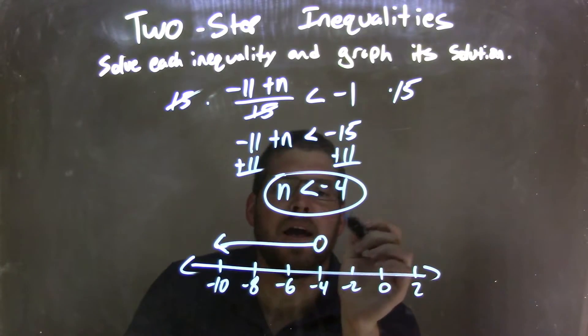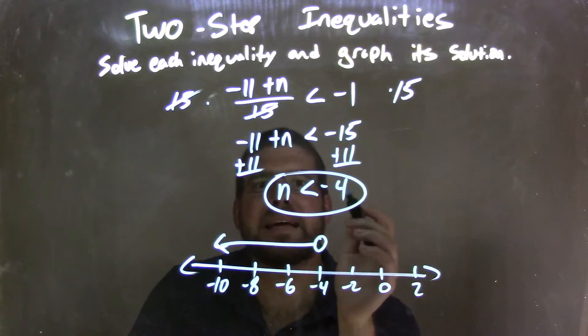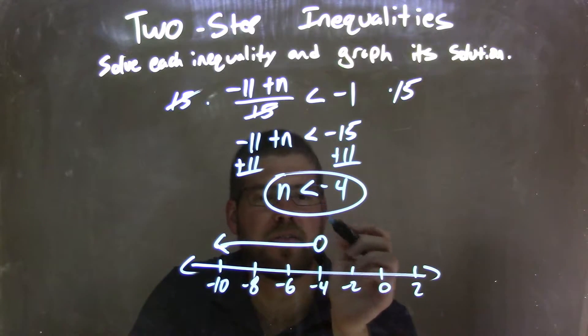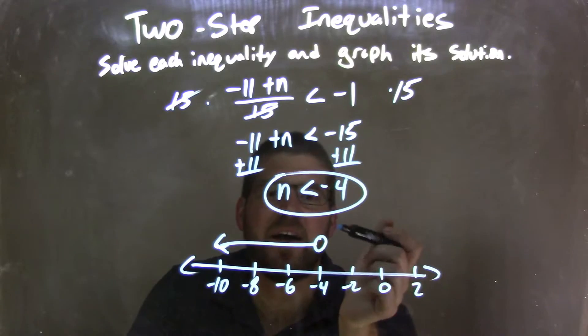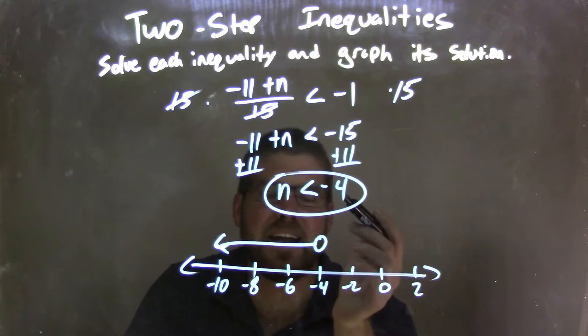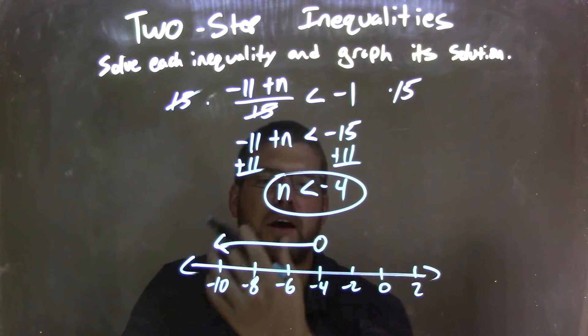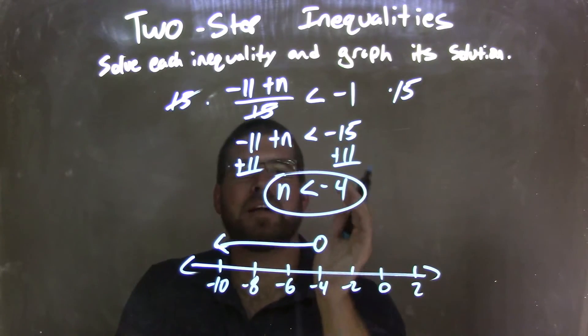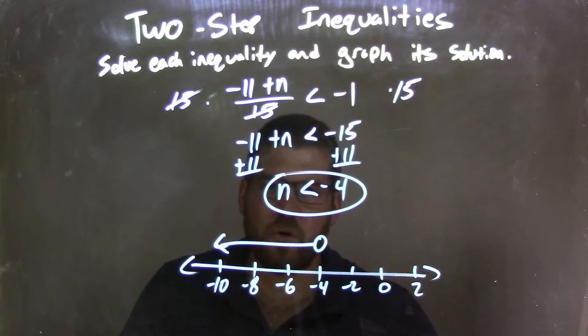But now I need to graph it. I have an open circle at negative 4 because it's not equal to, it's just less than. So I have an open circle there. Then from there, I shade it to the left because n is less than negative 4, straight to the left. There we go. So now we have a graph that matches our final answer of n is less than negative 4.